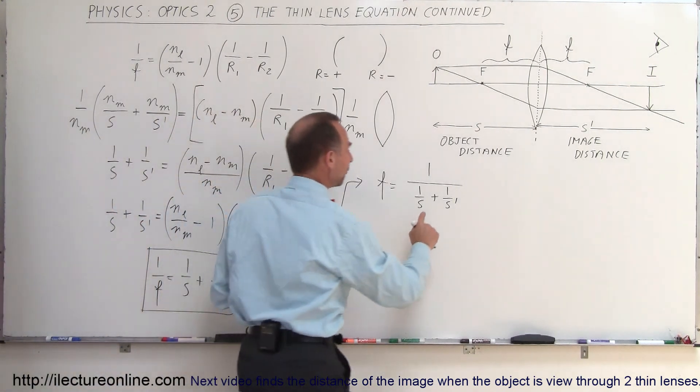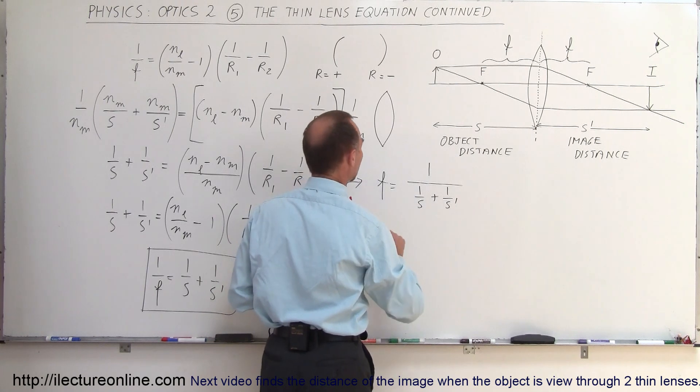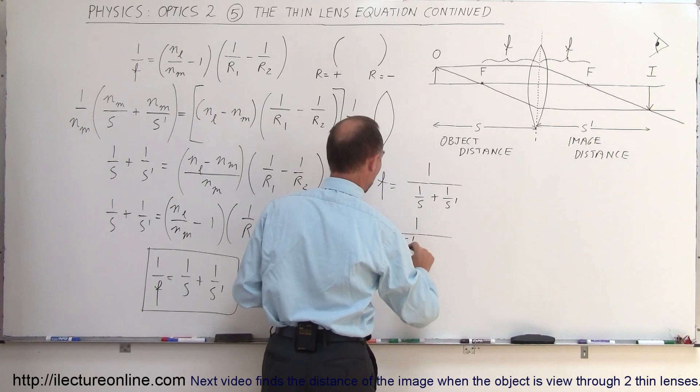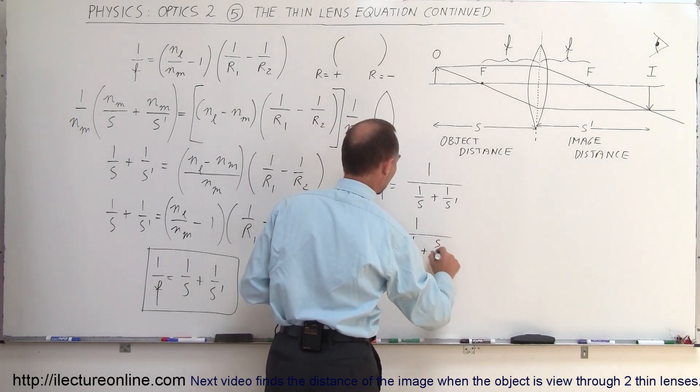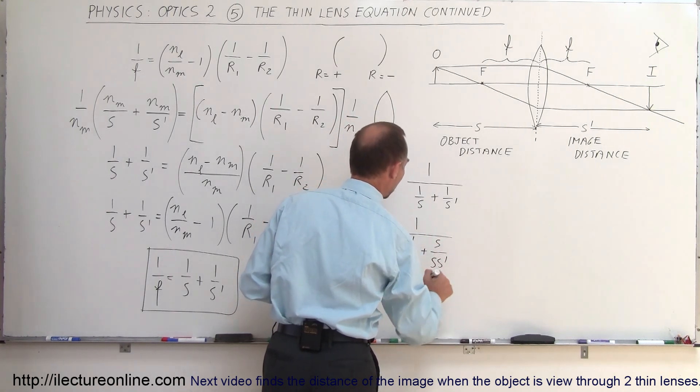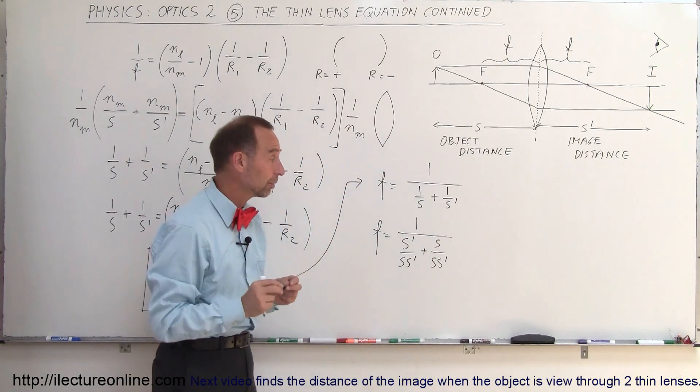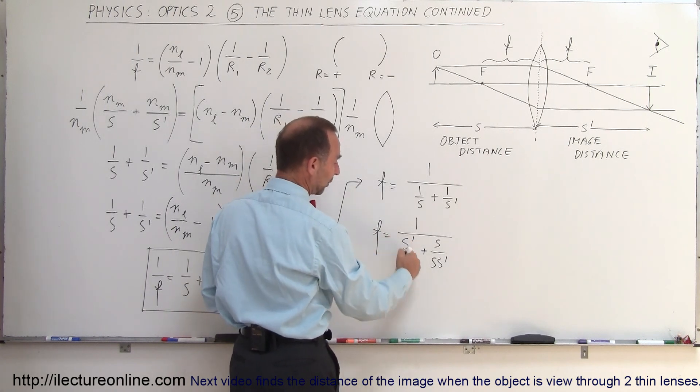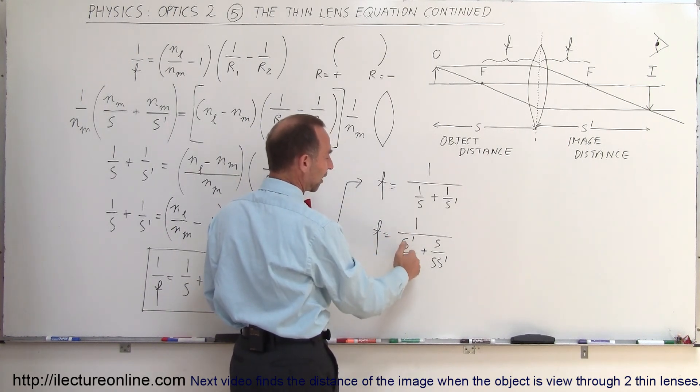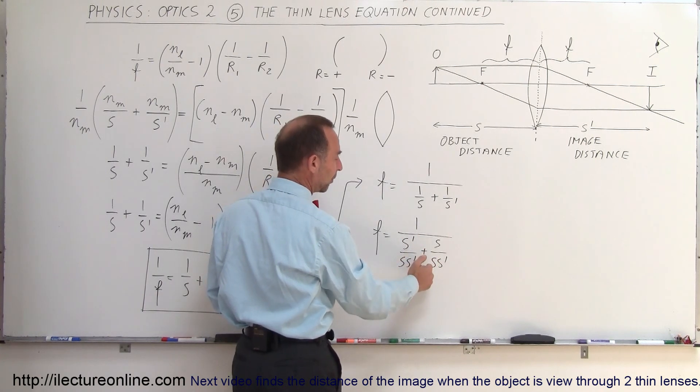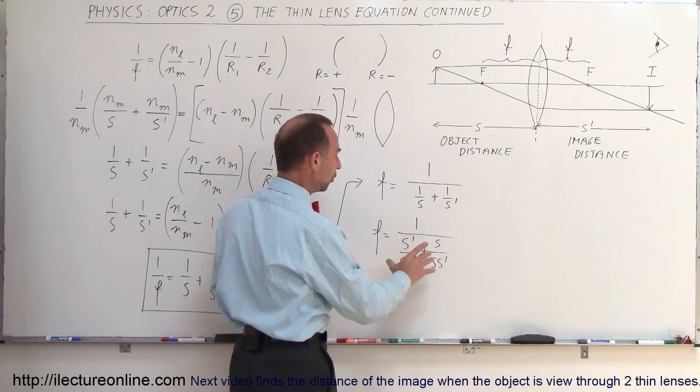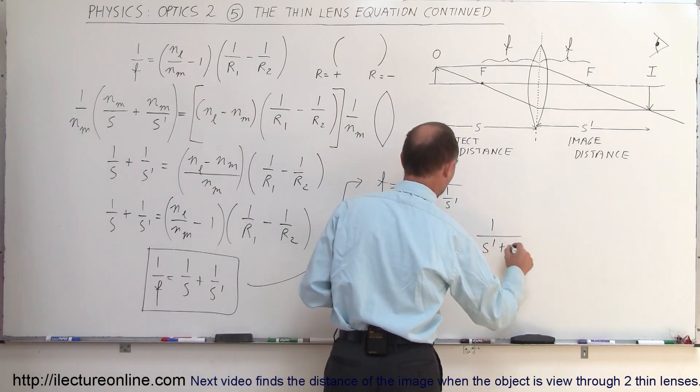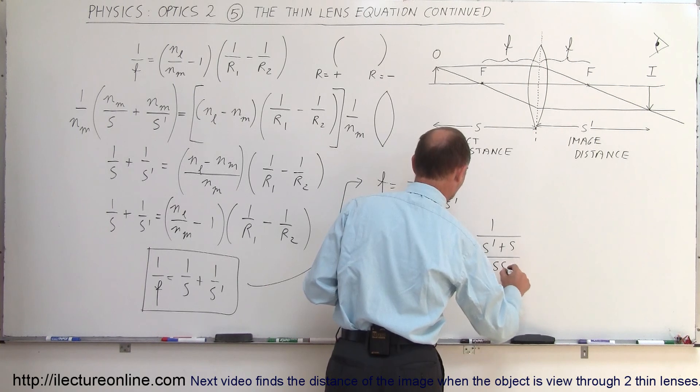In the denominator, we find the common denominator by multiplying those two together. So F equals 1 divided by (S prime over SS prime plus S over SS prime). I simply found the common denominator, which is the product of the two denominators, and put in the numerator what was missing. When I simplify, I get the original equation. But I can write this over a common denominator: 1 over (S prime plus S) divided by SS prime.